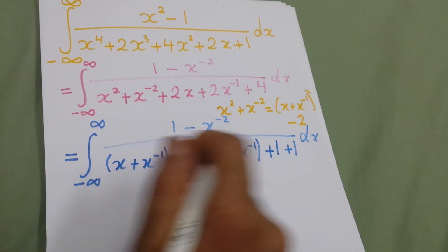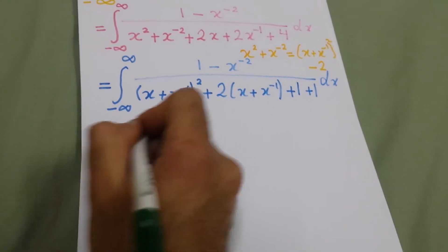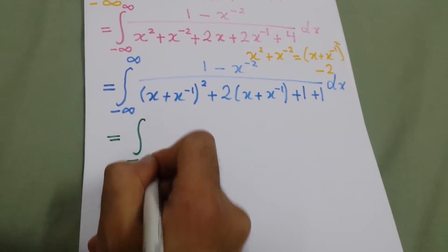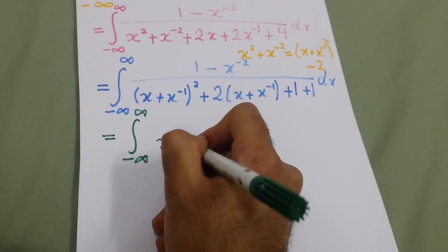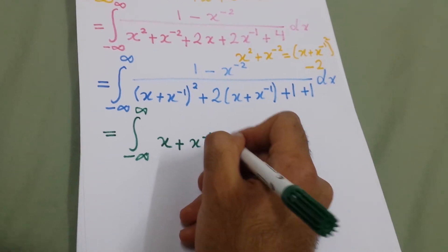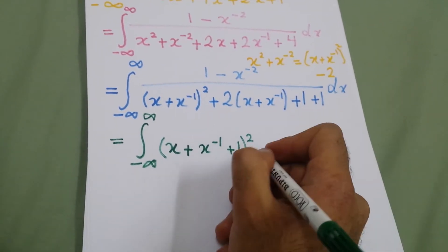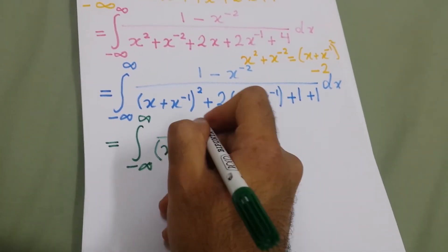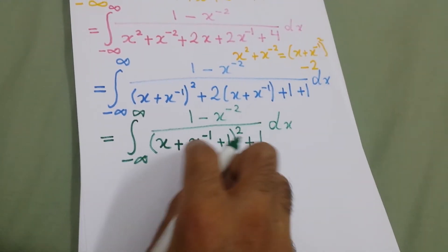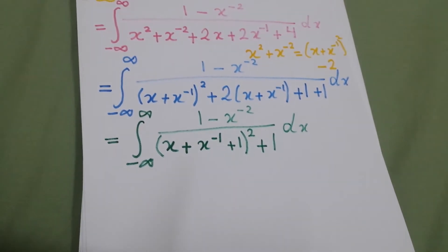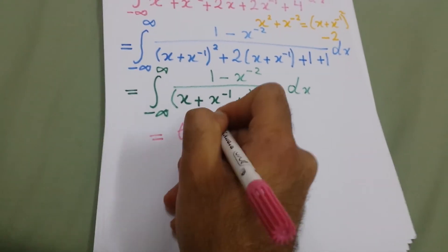The first three terms form a complete square, so we can write it as the integral of x plus x to the power minus 1, plus 1, all squared, plus 1, and we have 1 minus x to the power minus 2 dx. Now the derivative of this expression is exactly the numerator.